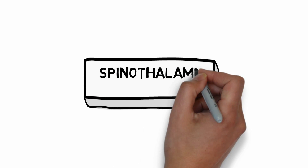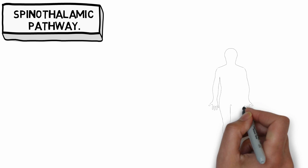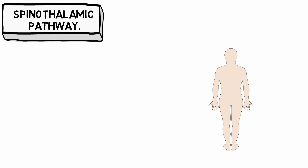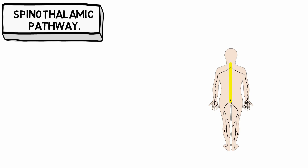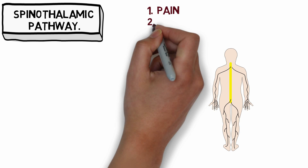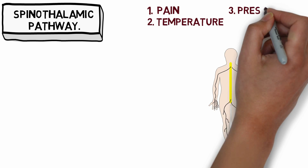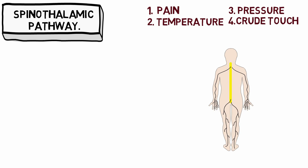In this video we will study about the spinothalamic pathways. The spinothalamic pathway is a group of nerve fibers that runs in the anterior and lateral part of the spinal cord and carries information like pain, temperature, pressure, and crude touch to the brain.